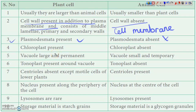Now we will see with respect to chloroplast. Chloroplast is present in plant cells because plants are green in color. Chloroplast is absent in animal cells.